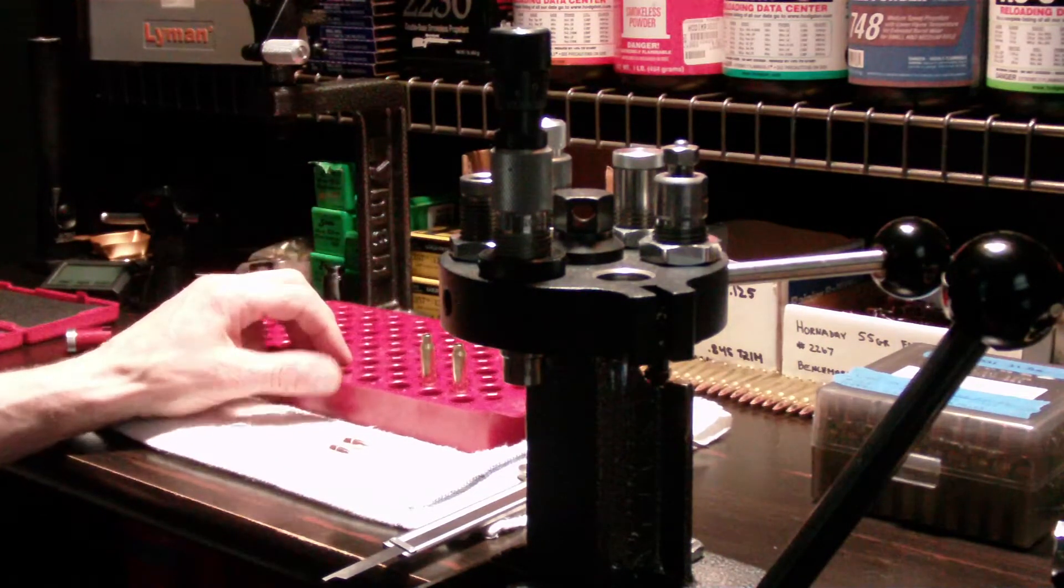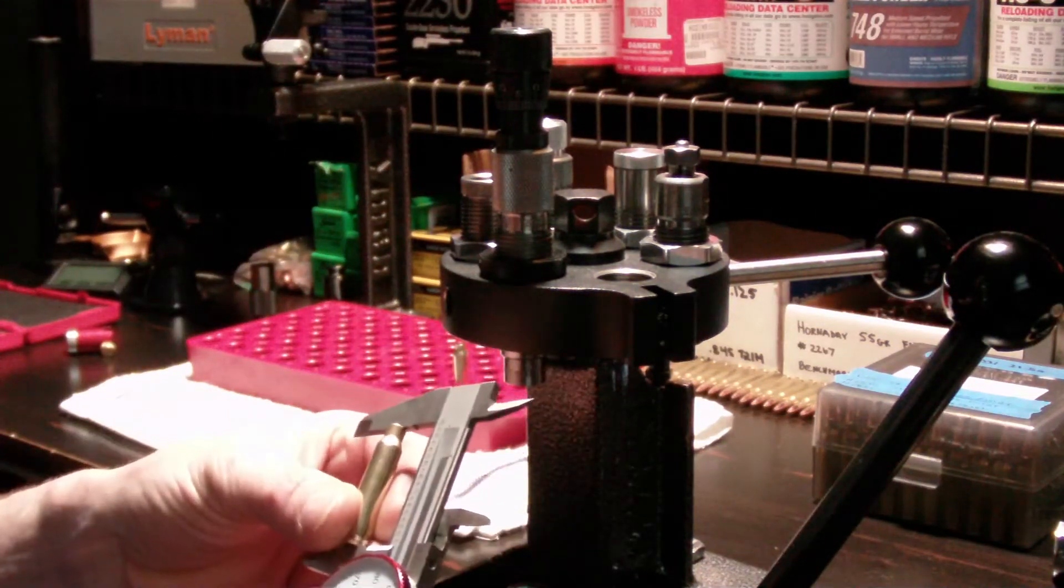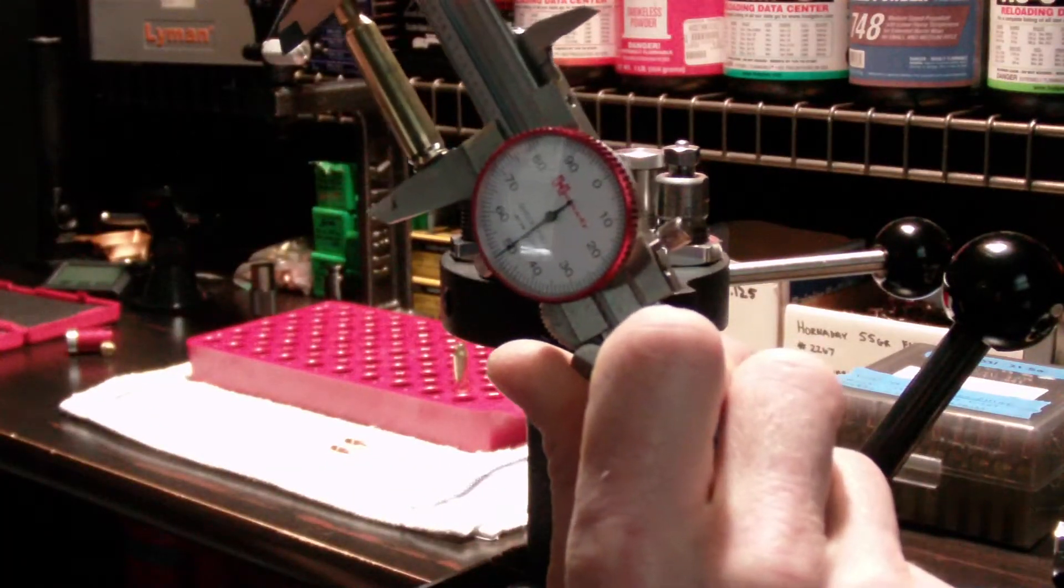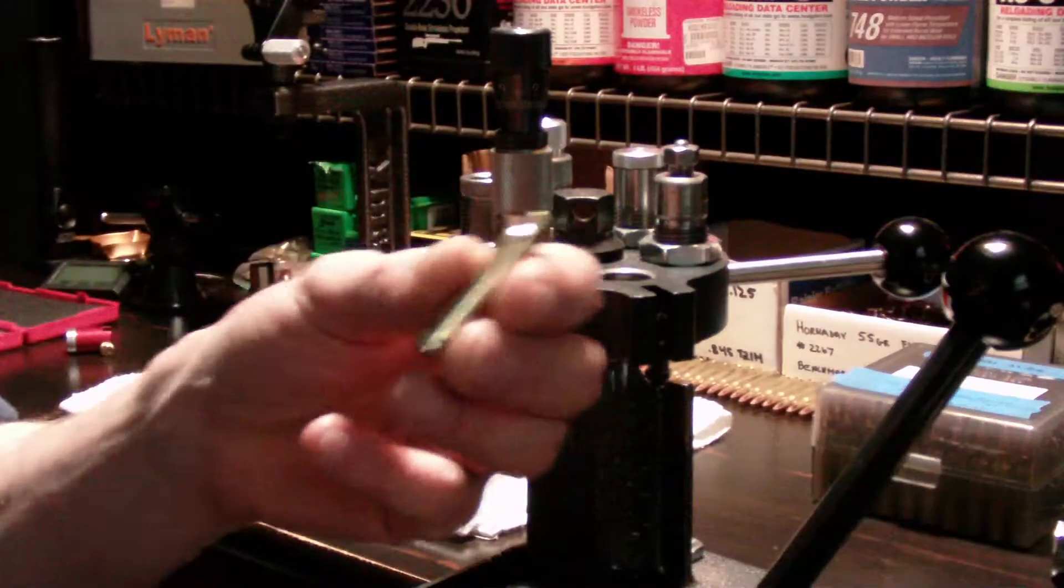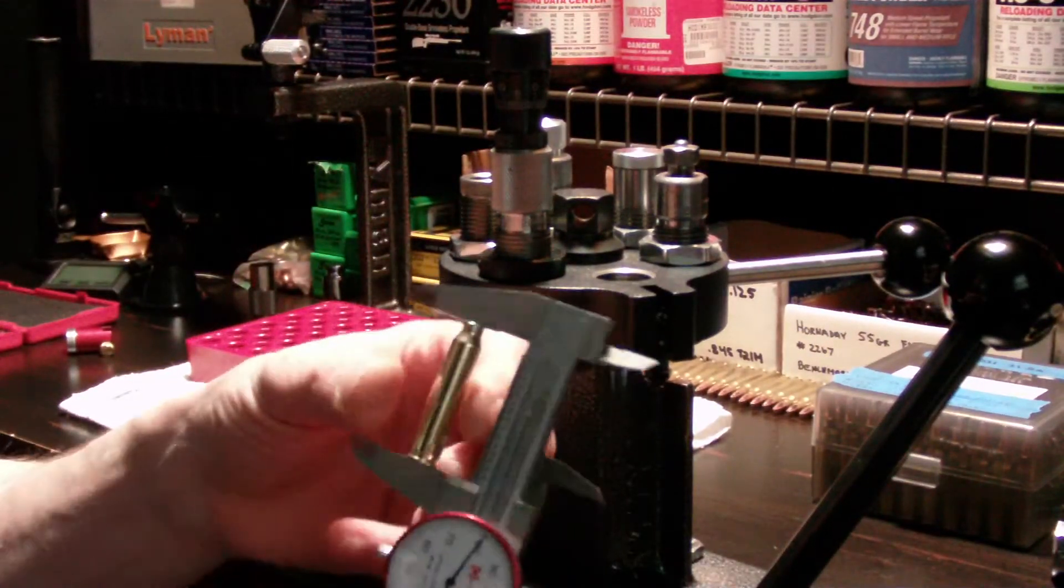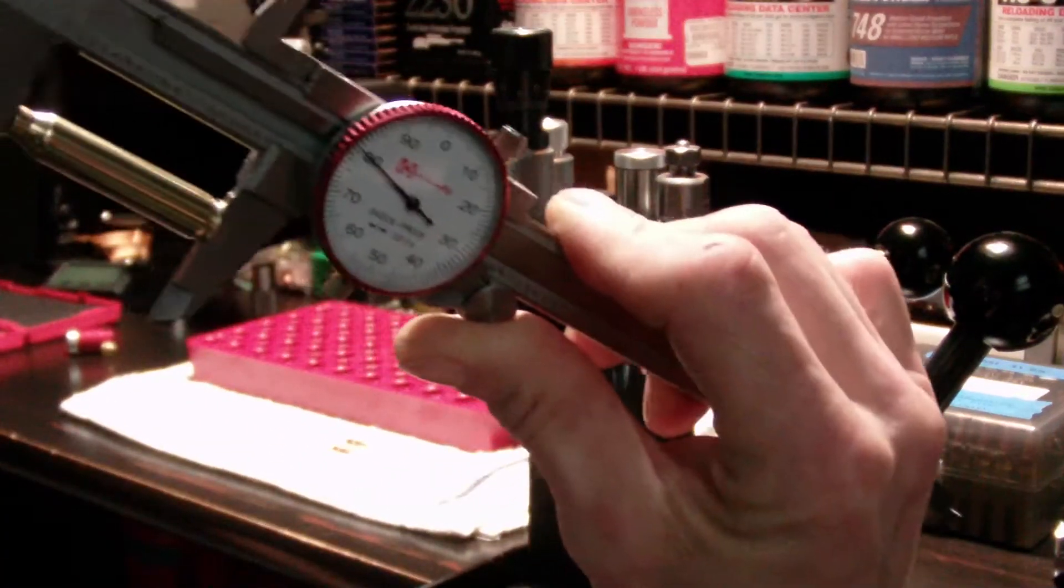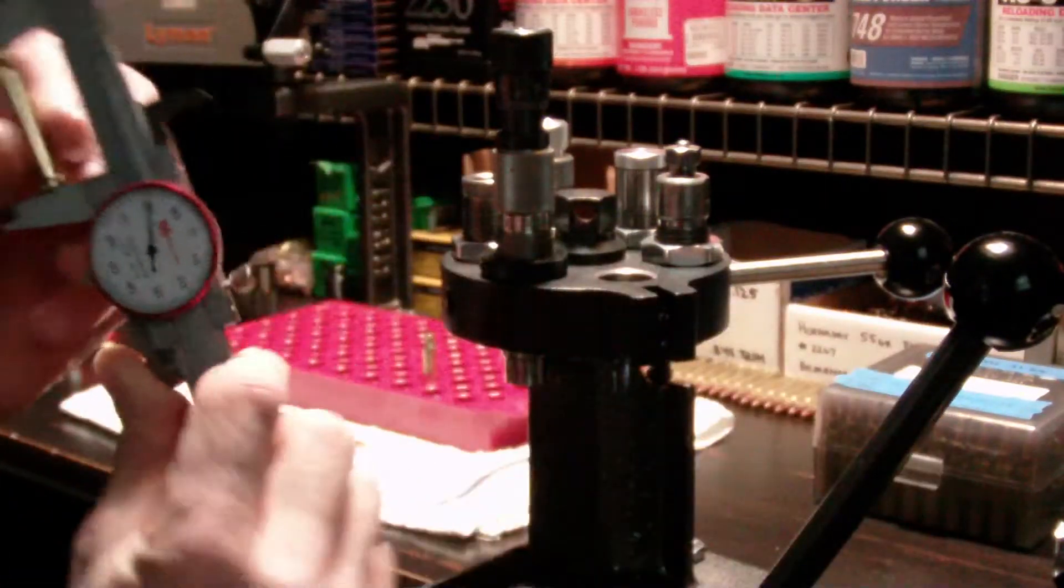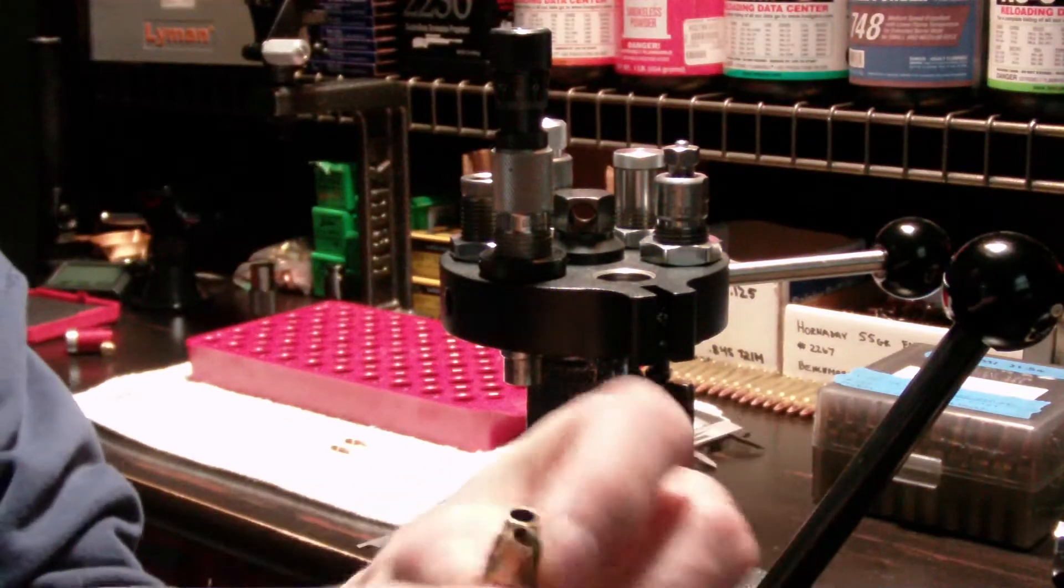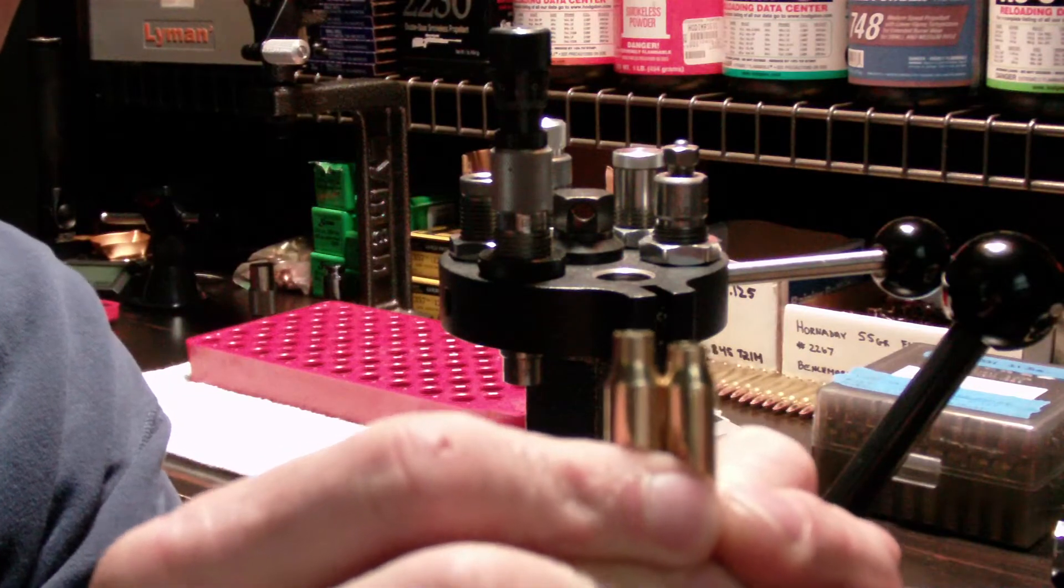So moving on, this case here is 1.750 - that's your trim-to length, so that case is perfect. And then this here is a case that I trimmed a lot off of, which is measuring in at 1.680. So we're talking 70 thousandths difference between these two. If I hold them up together you can definitely see just by the neck one is significantly shorter than the other.